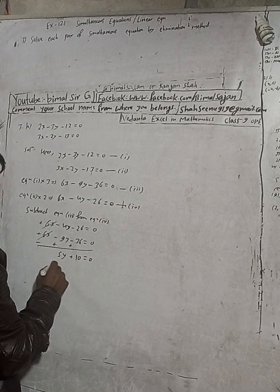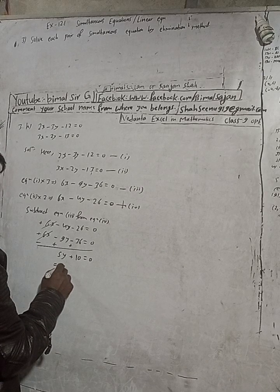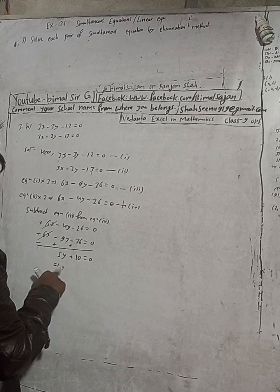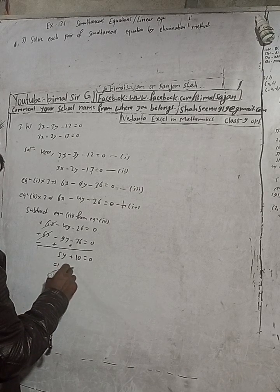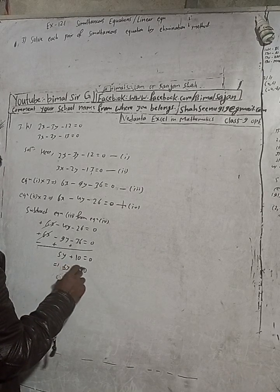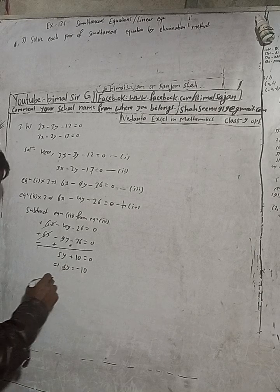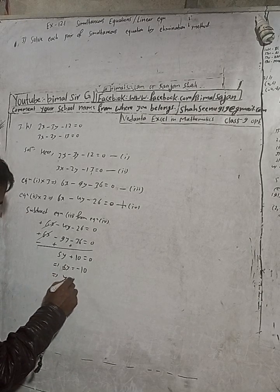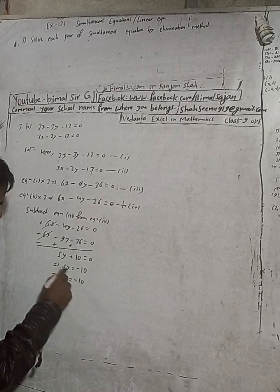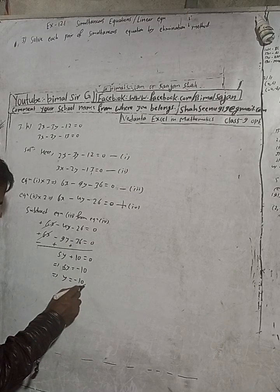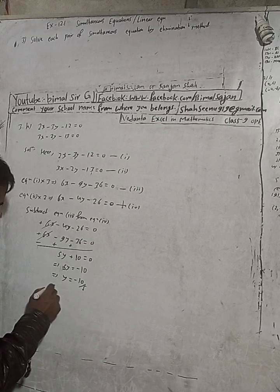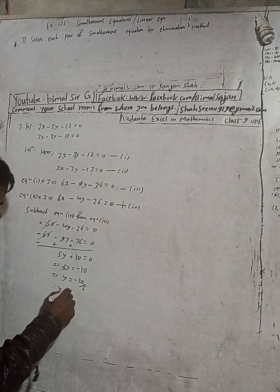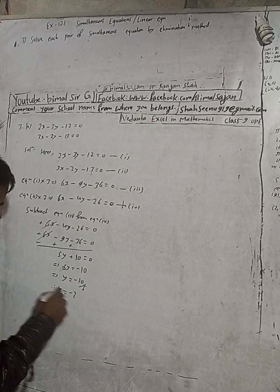This implies y is equal to minus 10. This implies y is equal to minus 10 divided by 5. Therefore y is equal to minus 2.